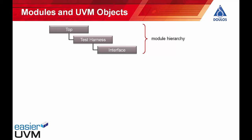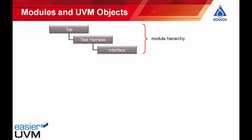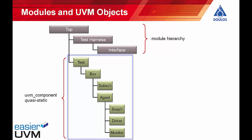The code generator generates a number of SystemVerilog modules and UVM classes that get instantiated as objects. In the module-based world we have a top-level module. The top-level module instantiates both the class-based verification environment and a test harness module, and the test harness module will instantiate a number of SystemVerilog interfaces and the design under test. The classes shown in green are all UVM components — each object is created by instantiating a class and each component class extends the UVM component base class.